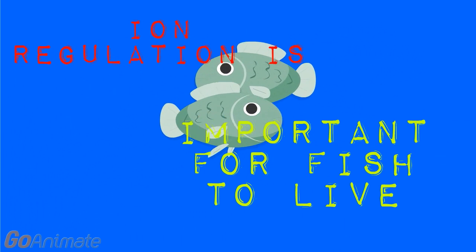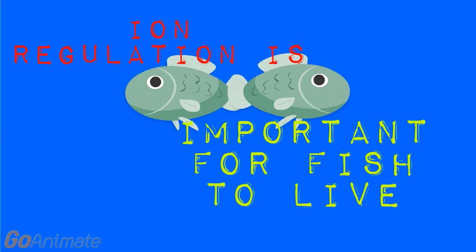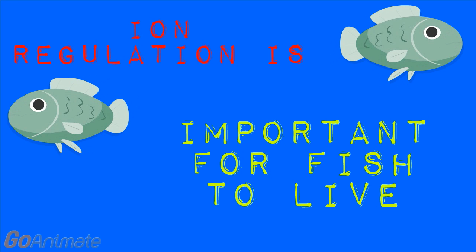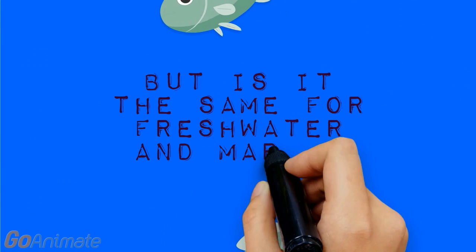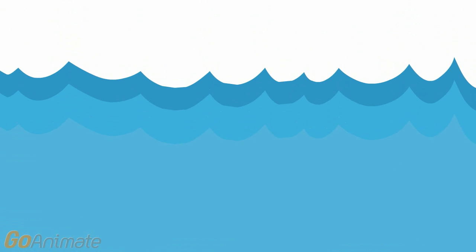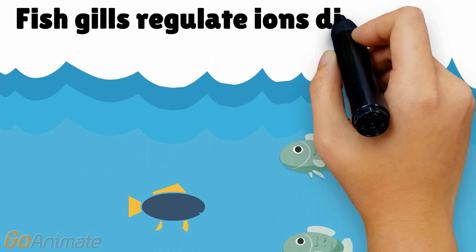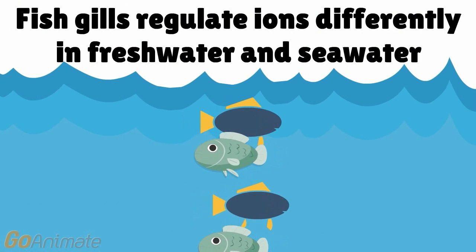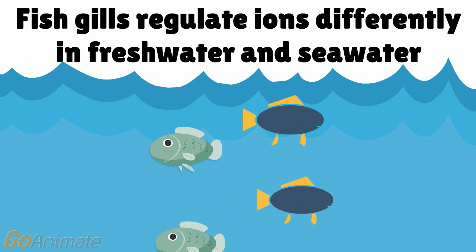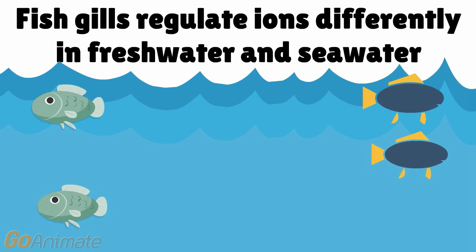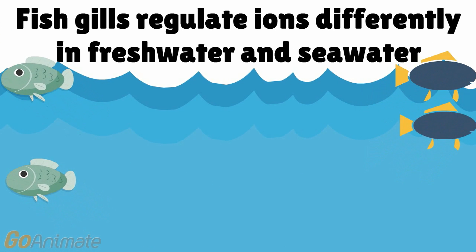Osmoregulation is important for fish to live. But is it the same for freshwater and marine water fish? Fish gills regulate ions differently in freshwater and seawater because the concentration of salts differs in freshwater and ocean water.